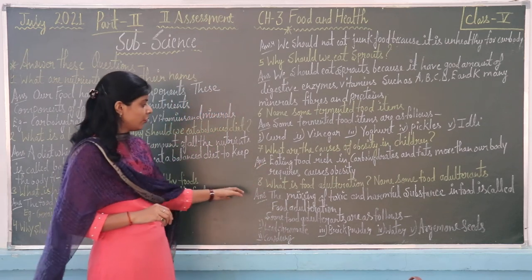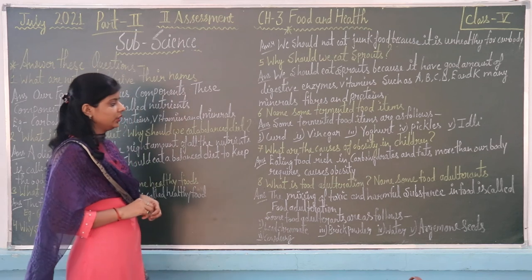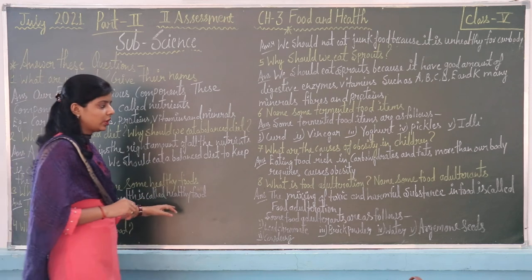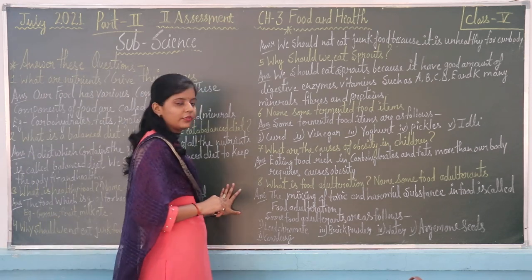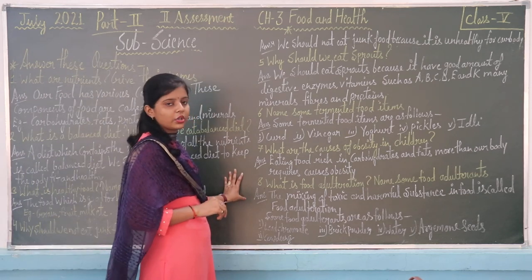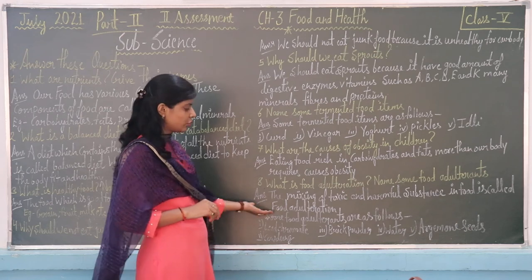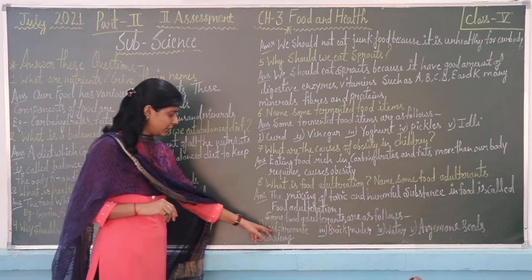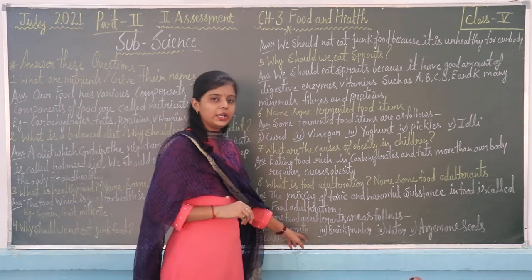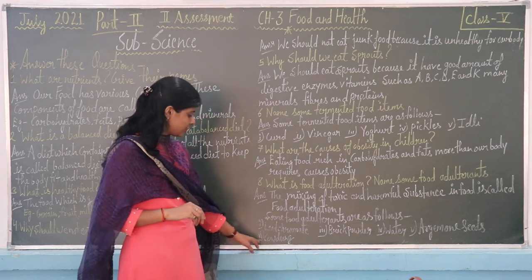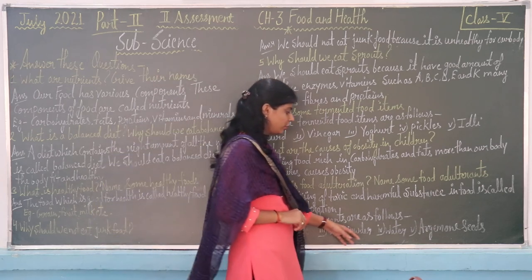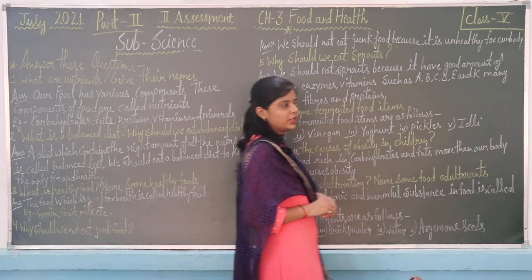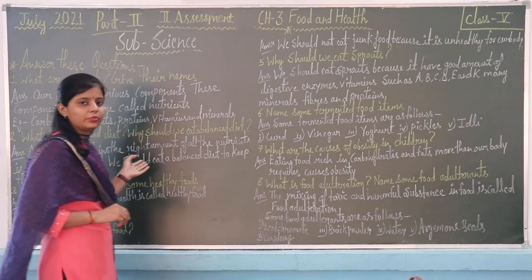Question number 8: what is food adulteration? Food adulteration is the mixing of toxic and harmful substances in food. Some examples of food adulteration are: lead flowing, chalk powder, brick powder, water, and harmful seeds.